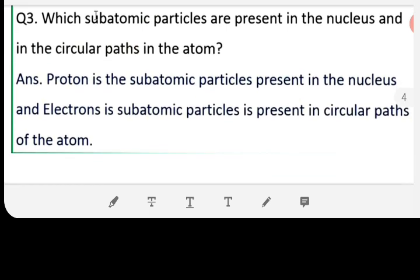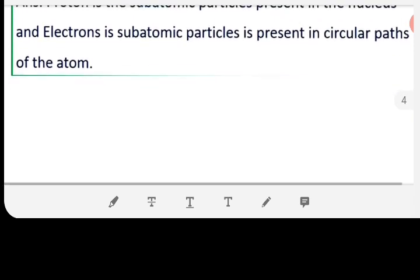Question 3: Which sub-atomic particles are present in the nucleus and in the circular path in the atom? Proton is the sub-atomic particle present in the nucleus and electron is the sub-atomic particle present in the circular path of the atom.